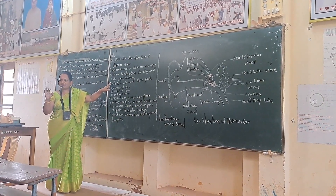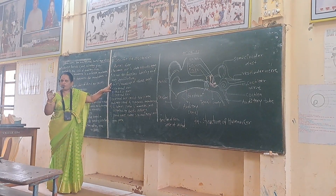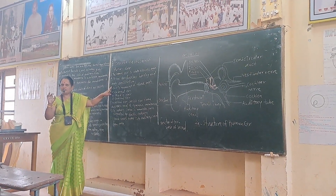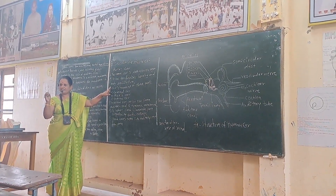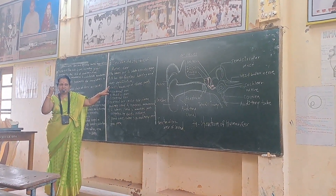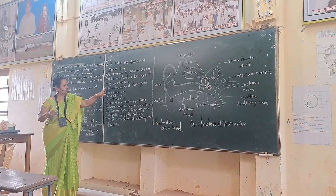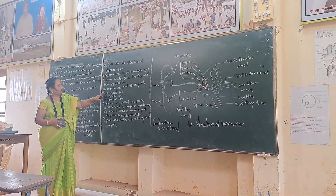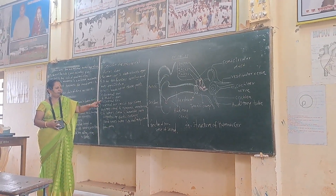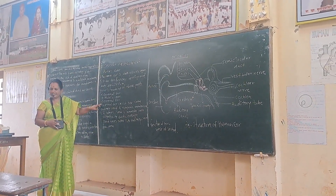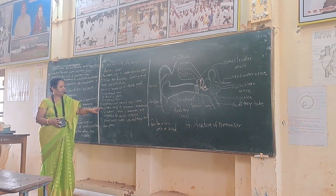The ear also provides equilibrium, or balancing, of the body — a sense of balance — which is transmitted through the ear to the brain. The ear is made up of three parts: external ear, middle ear, and internal ear.